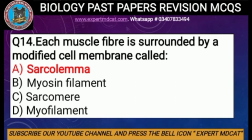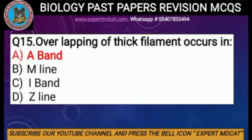Question number fourteen: each muscle fiber is surrounded by a modified cell membrane called — this is again repeated and seems to be the most important one. The correct option is A, sarcolemma.